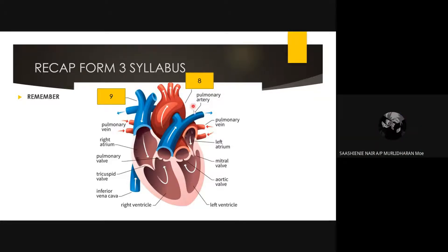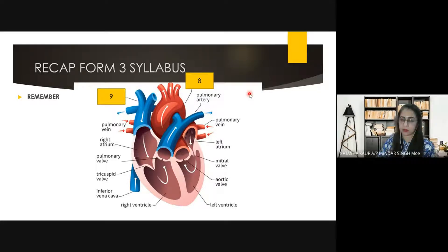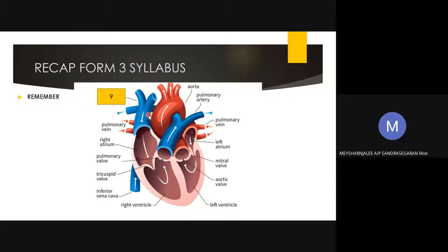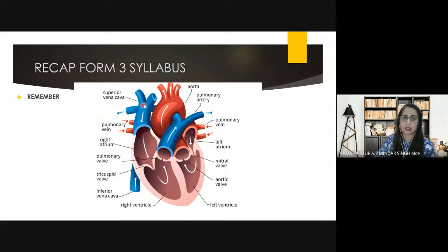And what about structure number eight? The aorta. Yes, that will be the aorta. And this one? The vena cava. That will be the vena cava. If the vena cava points up, that is the superior vena cava; from below we have the inferior vena cava.